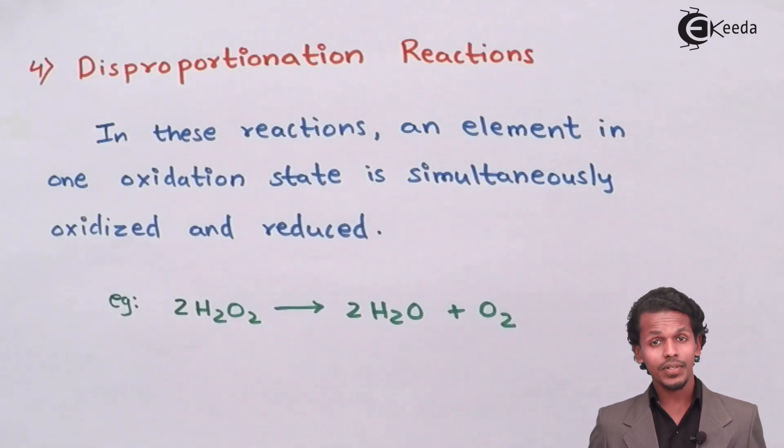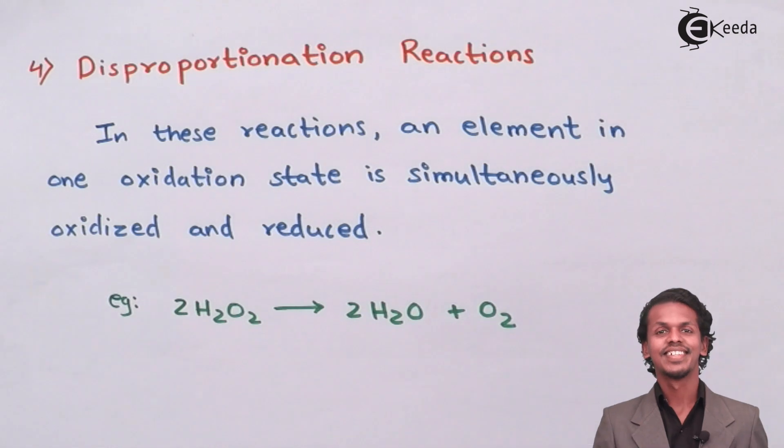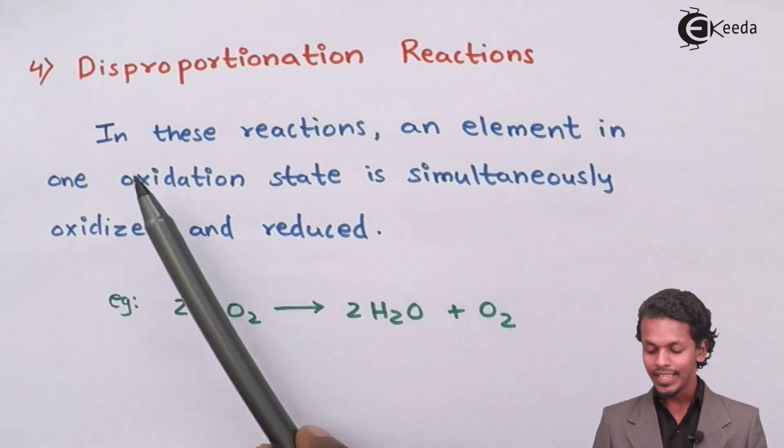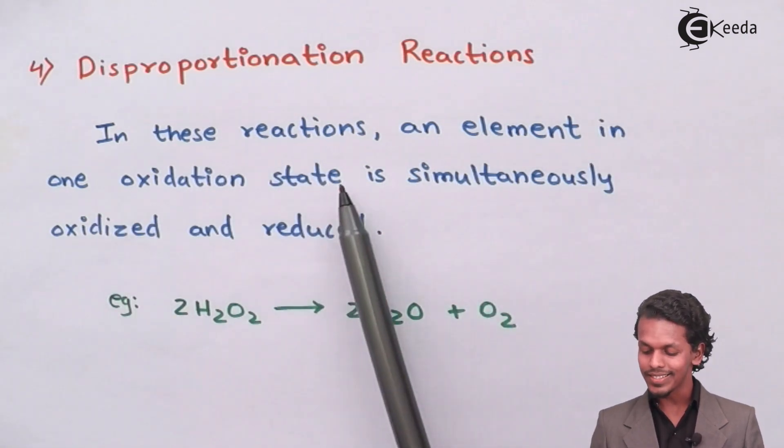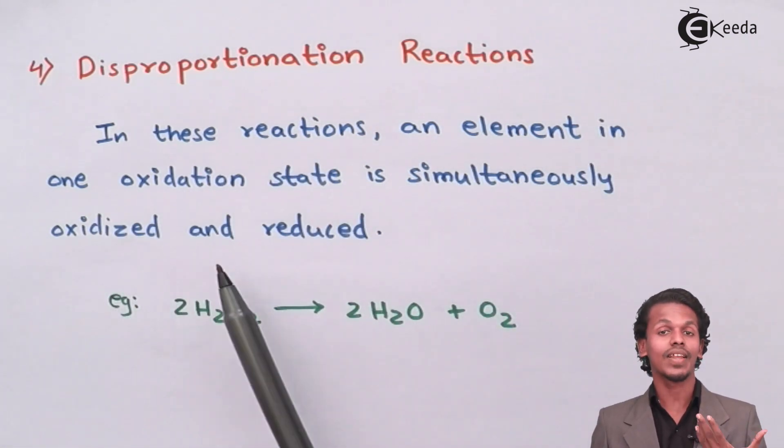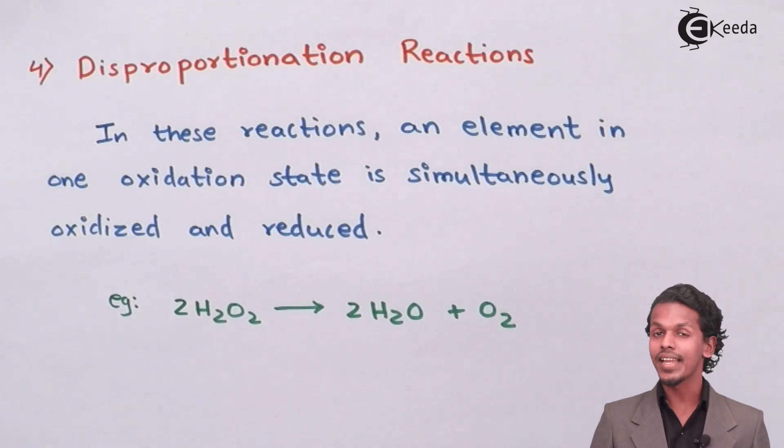So the Disproportionation Reaction is in this reaction, an element in one oxidation state is simultaneously oxidized as well as reduced in a chemical reaction.